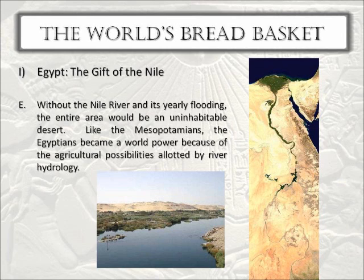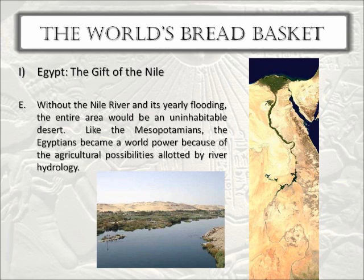Egypt runs the entire length of the Nile River until you reach a series of waterfalls known as cataracts. The river hydrology of this area allows the place to be much more productive than places powered simply by rainfall. Both Egypt and Mesopotamian cultures became worldwide powers by virtue of the possibilities allotted by rivers. This explains why Egypt becomes so powerful, while the Phoenicians, the Israelites, or the Philistines were not — they simply don't have a river feeding their lifeline.